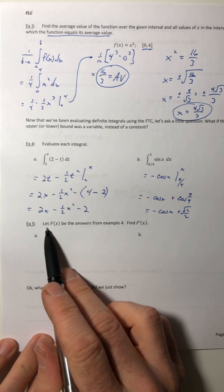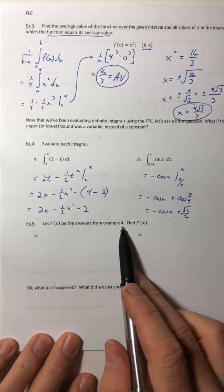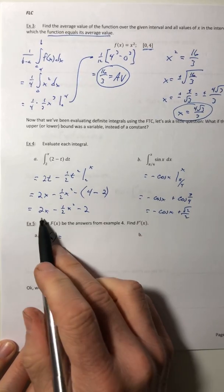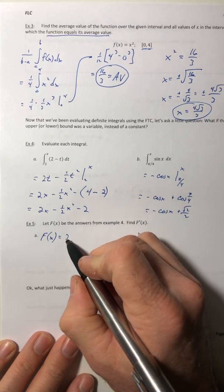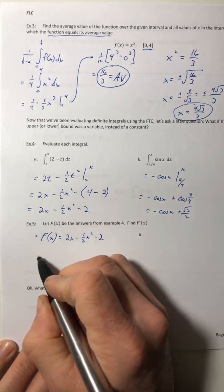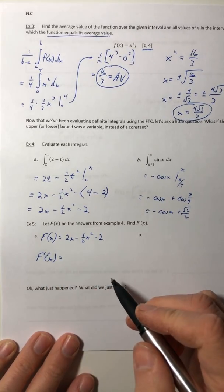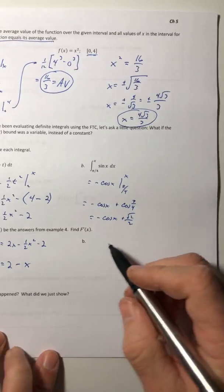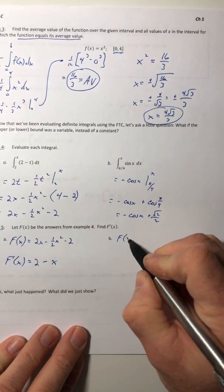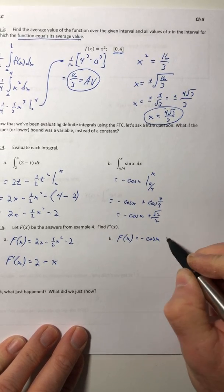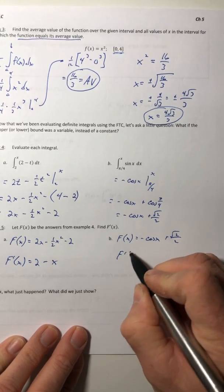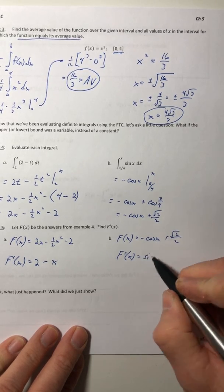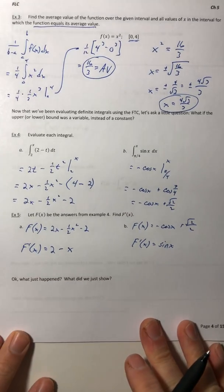So example 5, we're going to let capital F of x be the answers we got from example 4. But then we need to find its derivative. So now we're going to set f of x equal to our previous answer. So 2x minus 1/2 x squared minus 2. And now we need to get its derivative. So 2 minus x. And then for part b, same thing. Let f of x equal our answer from part b. And then find the derivative. So what is the derivative of negative cosine? Positive sine, and then that goes to 0.